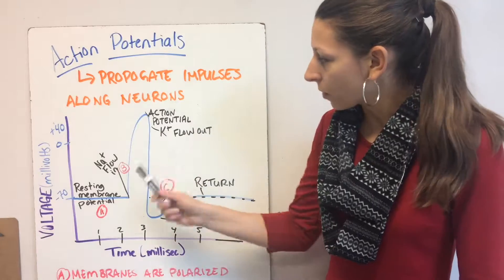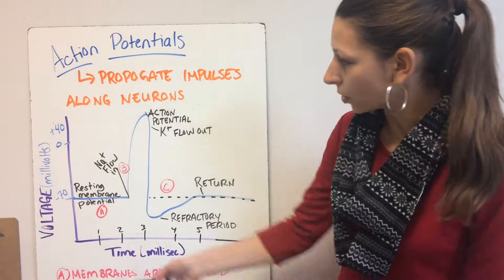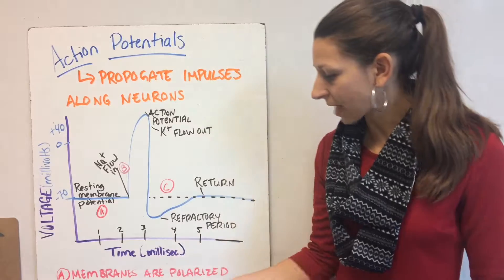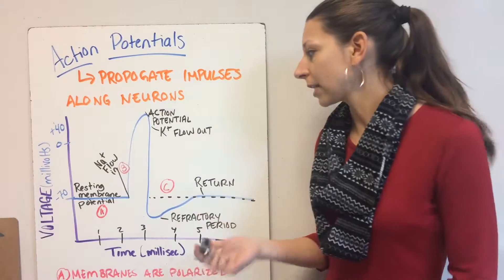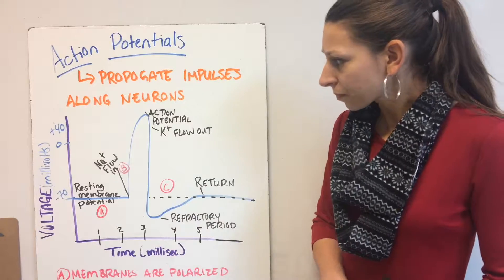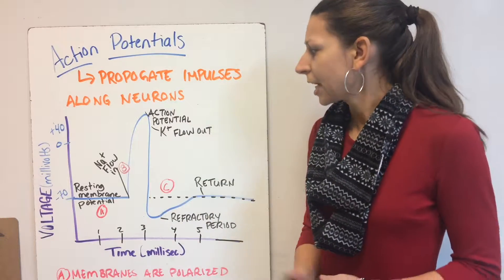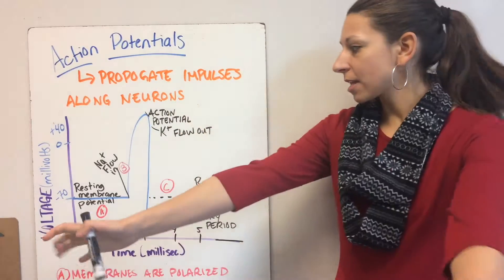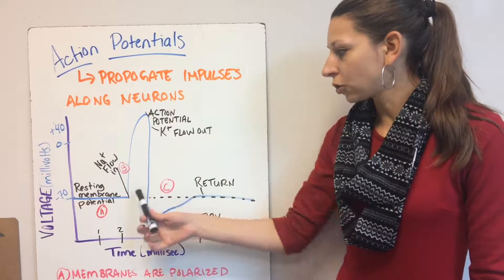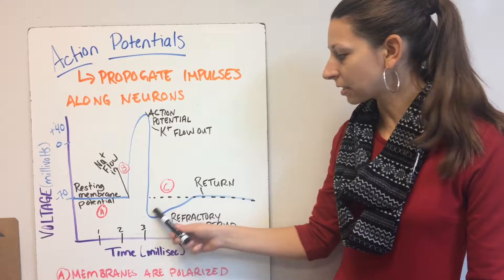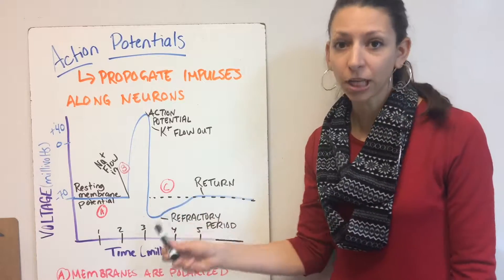When we get our action potential, we have this jump in voltage. Our sodium and potassium channels open and the membranes are locally depolarized. We have this huge jump in millivolts and the sodium ions flow in, the potassium ions flow out. Then we have the refractory period where we have to get back to our normal resting membrane potential. At this point, we cannot have another action potential.